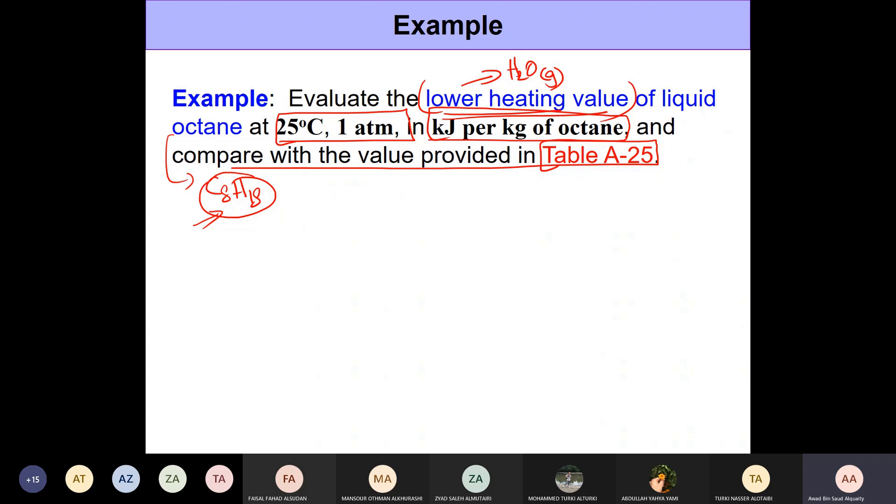The way to proceed here would be to come up with a balanced chemical reaction. The simple reason is because the heating value of the fuel - the lower heating value - is simply equal to the difference between the enthalpy of reactants minus enthalpy of products.